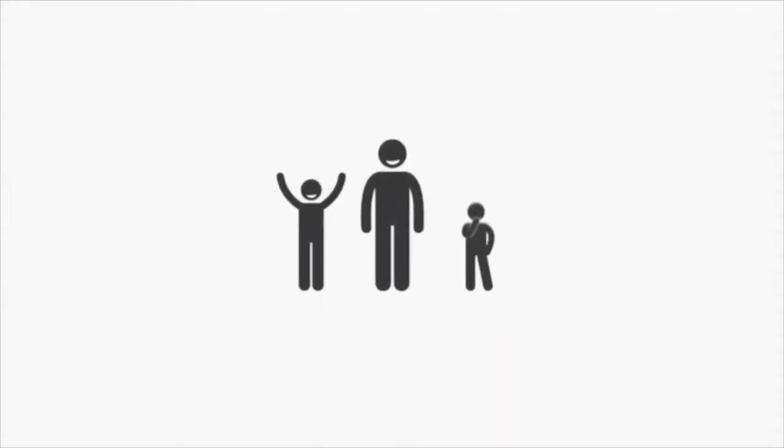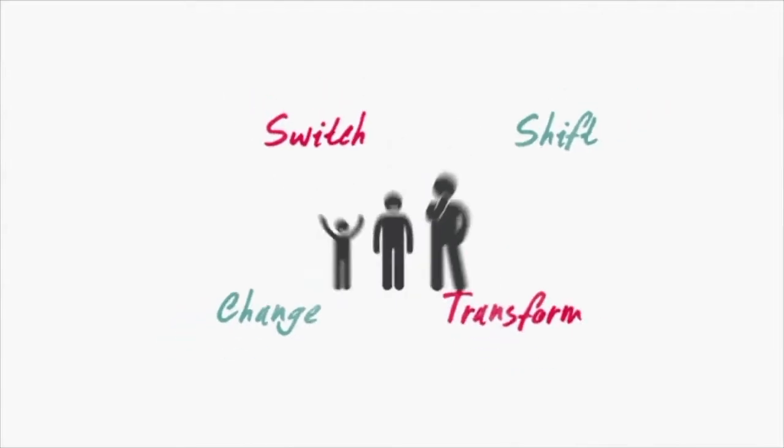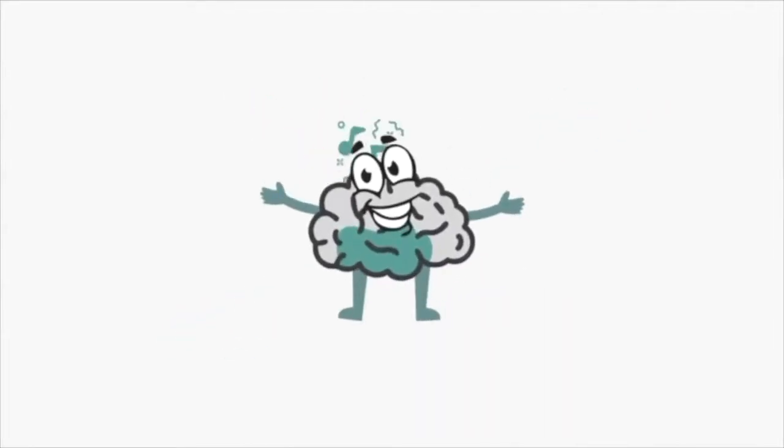The front brain carries on changing from when you're a child until you reach your 20s. These changes are important and help us to learn about the world around us and grow up. At the same time, the deep brain is excited by growing up, new things and new people.